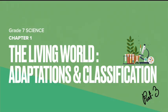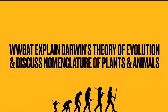Good morning class. Today we are going to study part 3 of chapter 1. The objective for today is we'll be able to explain Darwin's theory of evolution and discuss nomenclature of plants and animals. The words Darwin, theory of evolution, and nomenclature might be new to you — do not worry, we'll discuss them in today's class.